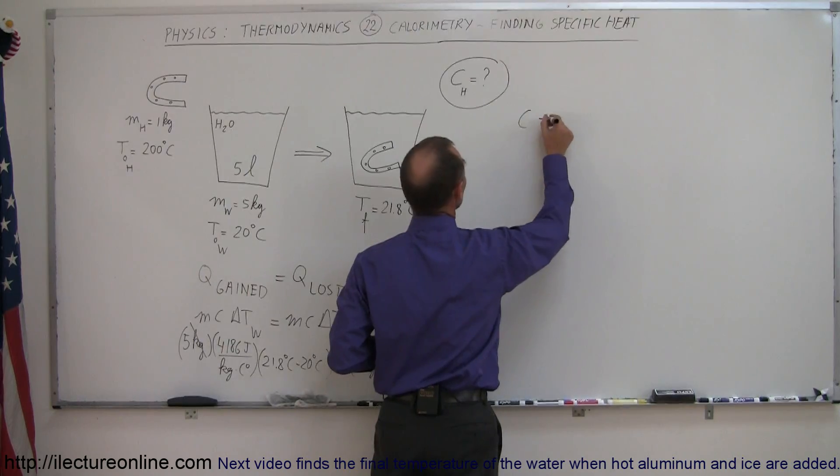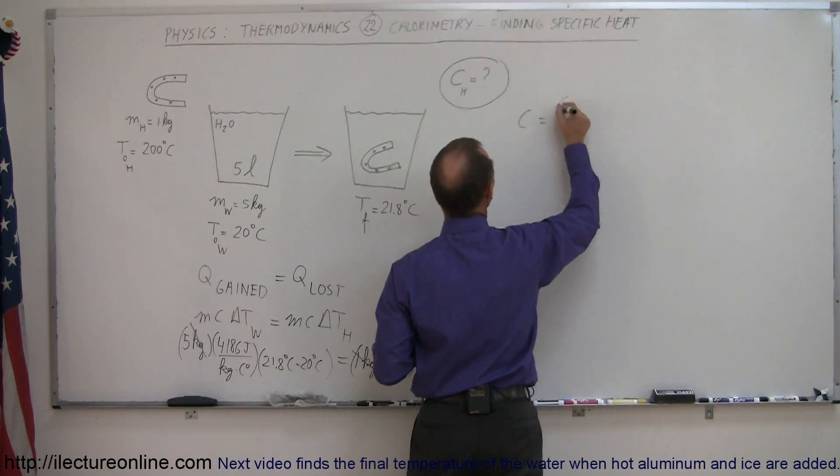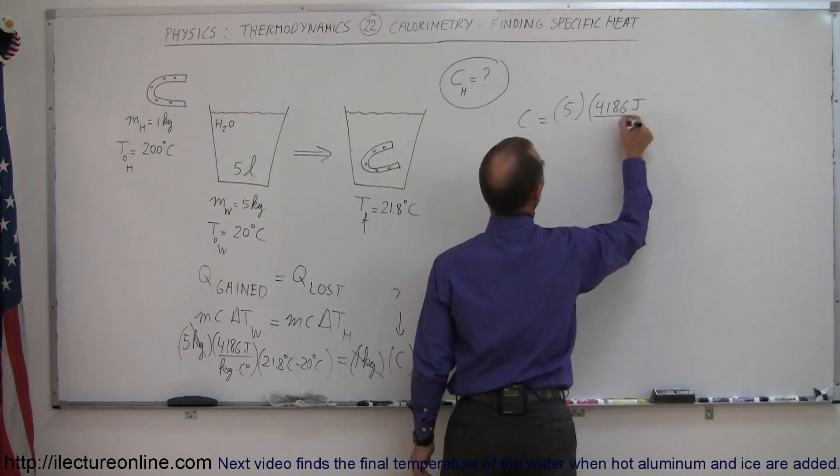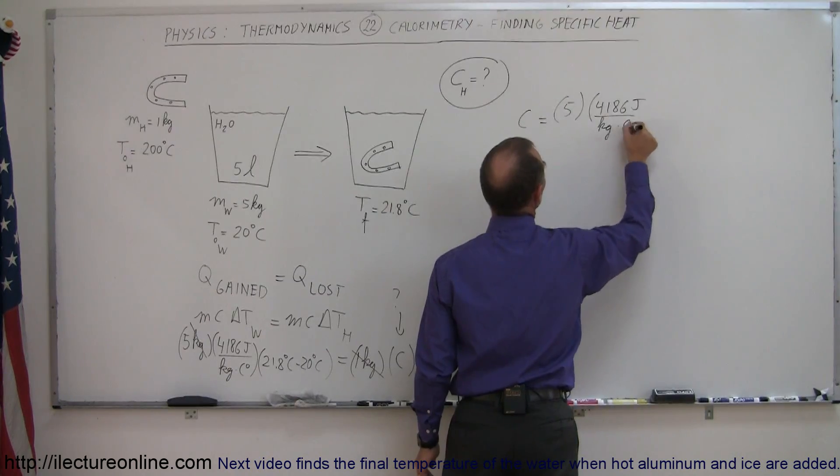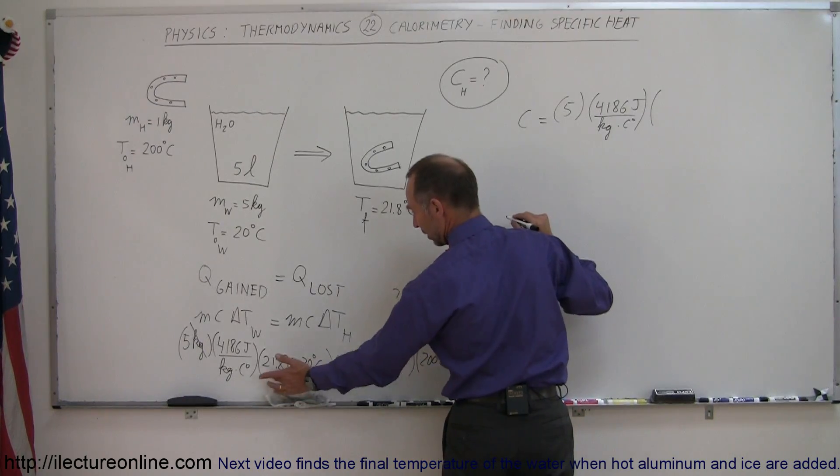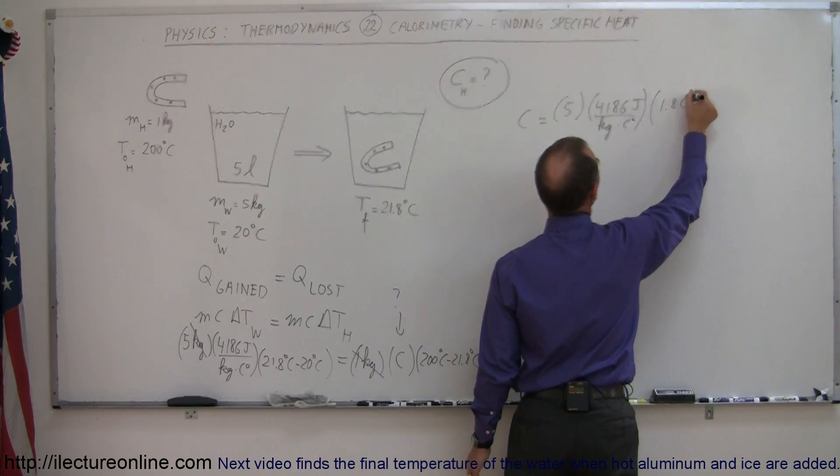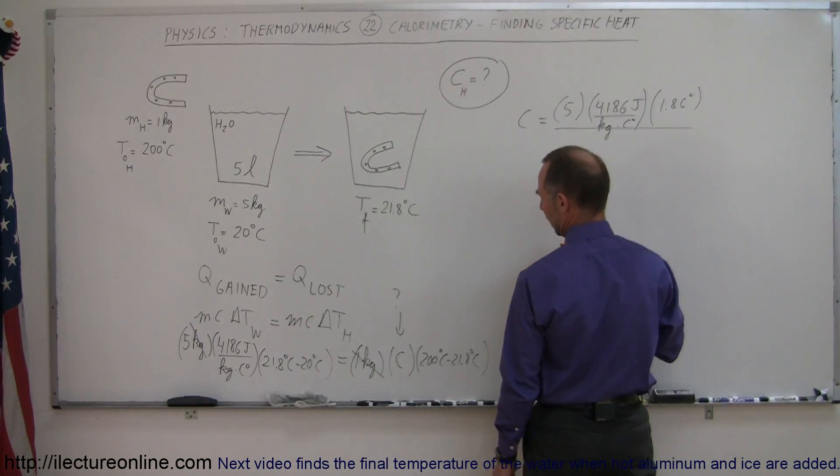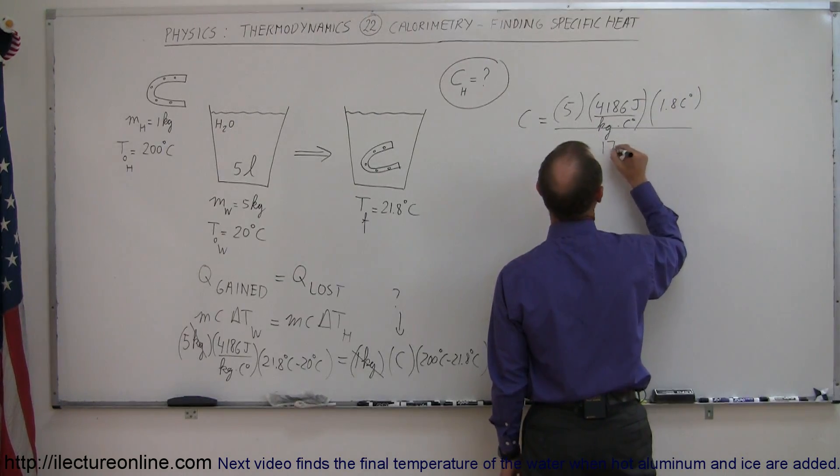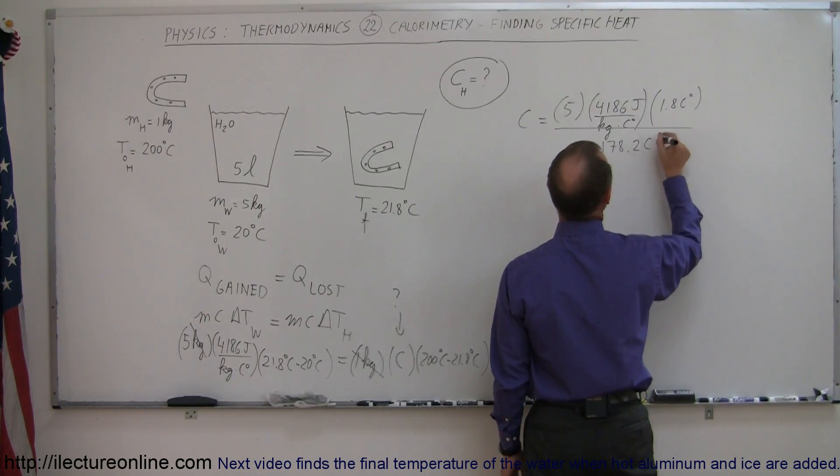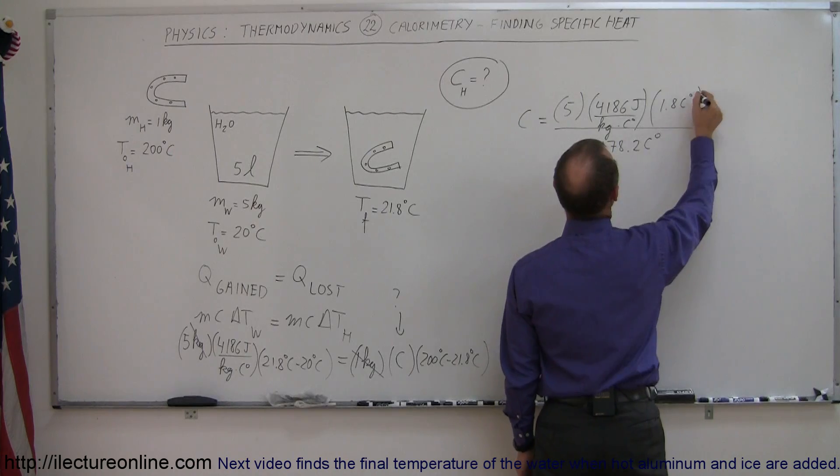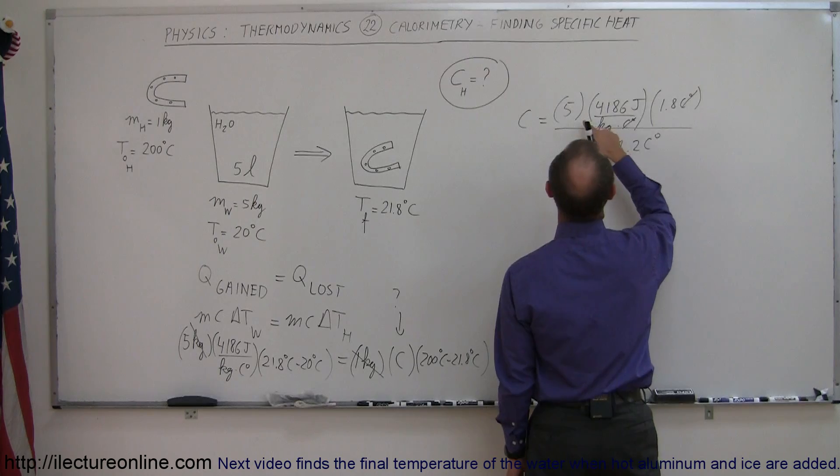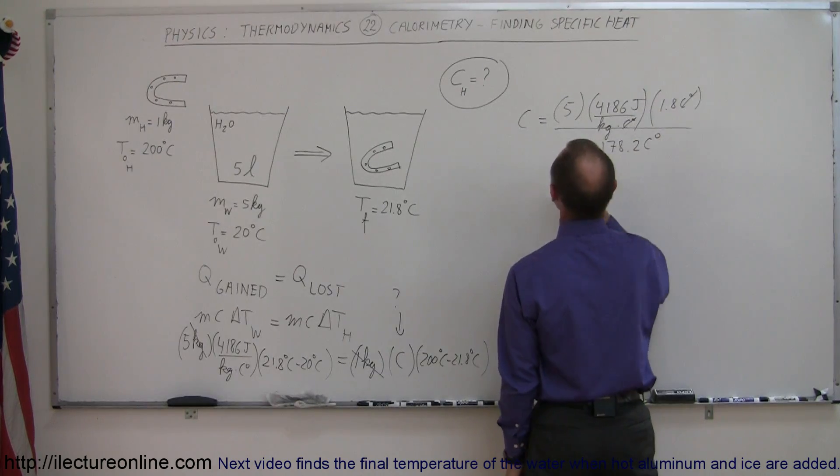So right here we have C is equal to 5 times 4186, that's the specific heat, that's joules per kilogram per degree centigrade, times the difference between the two, which is 1.8 centigrade degrees, and divide the whole thing by the difference here, which is 200 minus 21.8, that would be 178.2 centigrade degrees. So this will cancel out with that, and that gives us joules per kilogram per centigrade degrees, so the units work out.